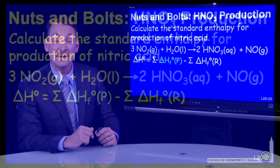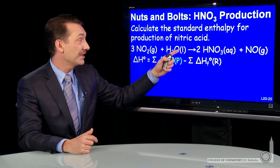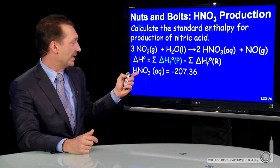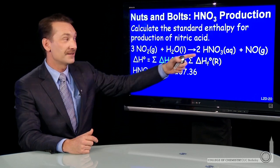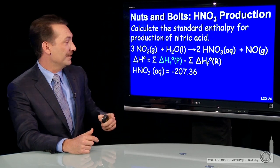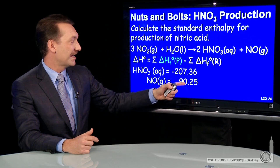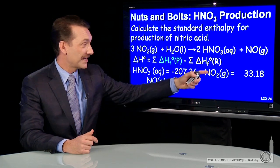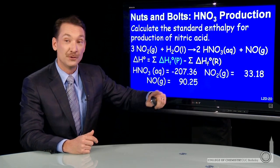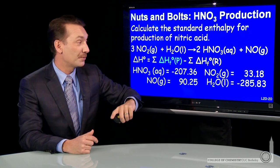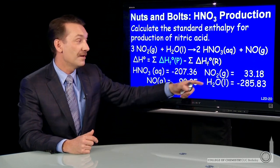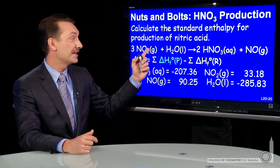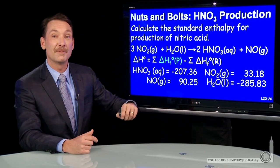So we have to go to a table and look up all the heats of formation. Here they are: the heat of formation of aqueous nitric acid, the standard heat of formation for NO gas, the standard enthalpy of formation for NO2 gas, and the standard enthalpy of formation of liquid water. We combine those, and we can calculate the enthalpy for this chemical reaction.